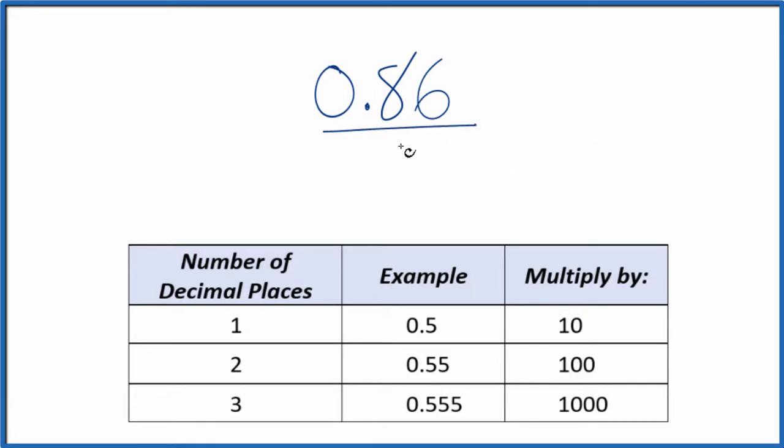First, let's just call this 0.86 over 1. Because we're dividing by 1, we haven't changed the value, but we have the start of a fraction now.